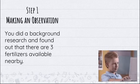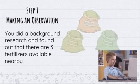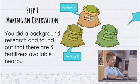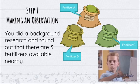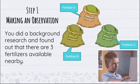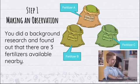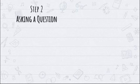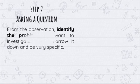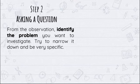In our next step, you did background research and found out that there are three fertilizers available nearby. Let's name them fertilizer A, fertilizer B, and fertilizer C. These are the fertilizers we want to apply to our plants. However, since there are many fertilizers available, we don't know which fertilizer is the most effective one for planting. That's why our next step in the scientific method is to ask a question. You are now going to formulate your own problem. From the observation, you need to identify the problem you want to investigate. Try to narrow it down and be very specific.